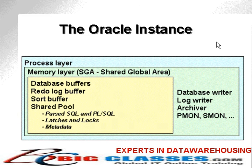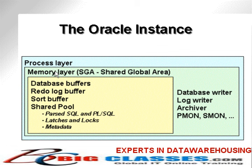The Oracle instance is a term used to describe the part of an Oracle database which exists in memory when an Oracle database is running — namely, the memory layer, the Shared Global Area, and the process layer. In other words, the Oracle instance is made up of all the memory buffers plus the processes. This is what causes the Oracle database to actually run.